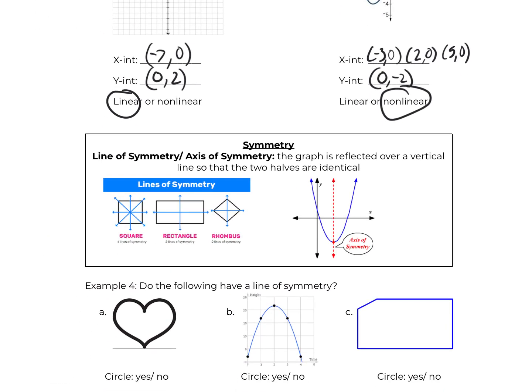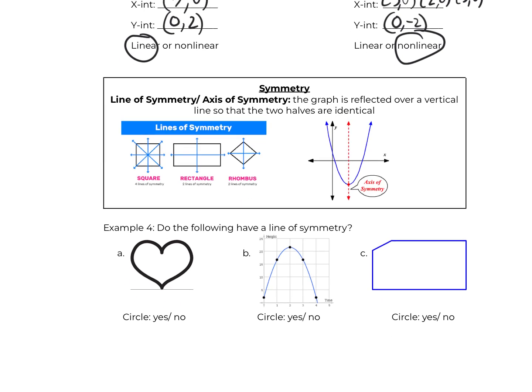Symmetry: the line or axis of symmetry is where the graph is reflected over a vertical line so that the two halves are identical. We only care about a vertical line of symmetry. On example 4a, there is a vertical line of symmetry going right through the middle — each half is the same, left and right, so that is symmetrical. On letter b, the line of symmetry goes right through the vertex, and it is symmetrical — if you flip it over that line, it would be a mirror image of itself.